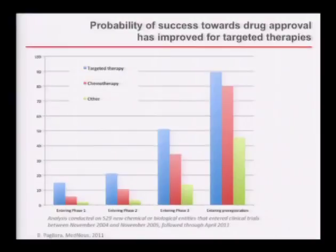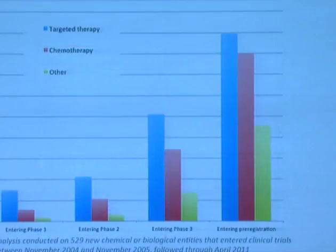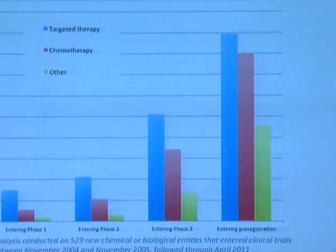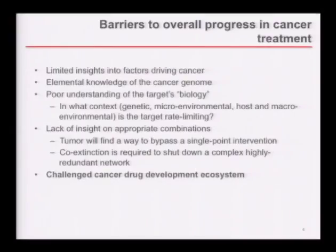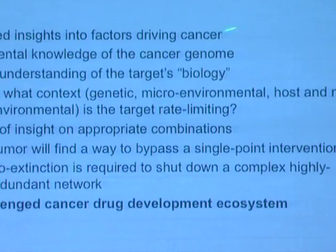While emphasizing that targeted therapies and many of those compounds Michael was mentioning have really fared better compared to conventional therapies — the percentage of drugs approved compared to traditional therapies has worked much better. These are statistics for drugs that entered clinical trials between 2004 and 2005, followed until April 2011. But essentially, there are multiple reasons for failures and also opportunities for changes in the way we approach the problem.